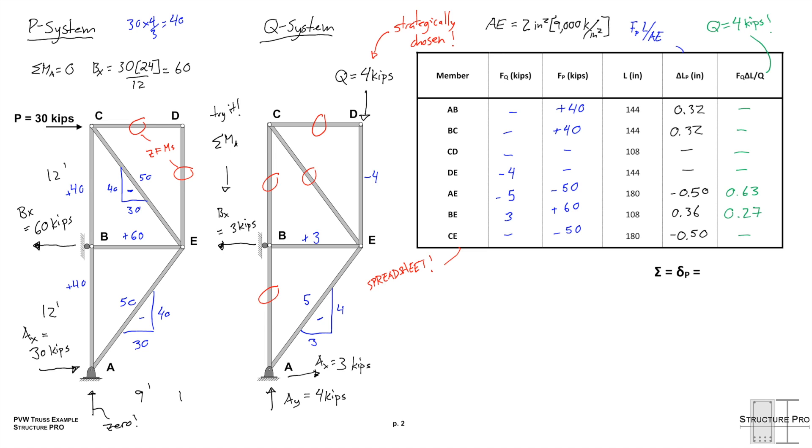Looking at this, we didn't really need the full table. We could have just recognized that only member AE and member BE have both FPs and FQs, and we could have just done a summation that way. That might have been easier, but the spreadsheet or the table is a good way to set it up, especially for more complicated trusses.